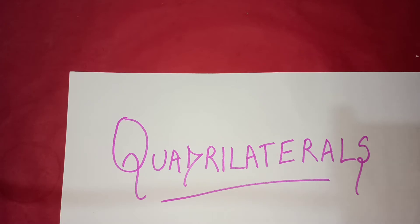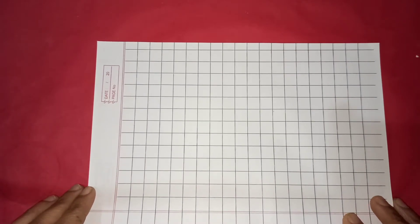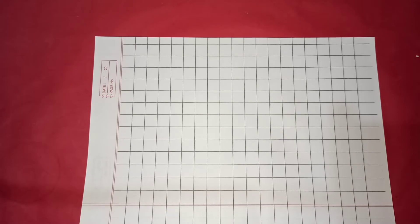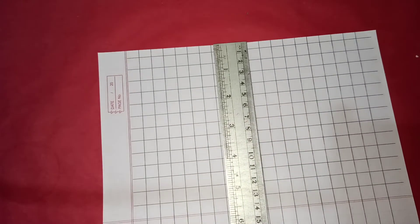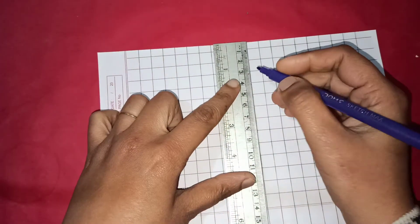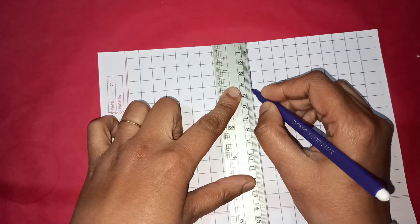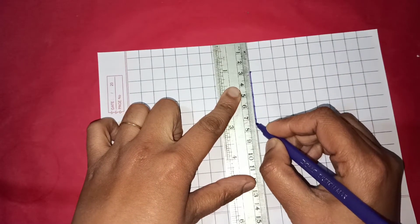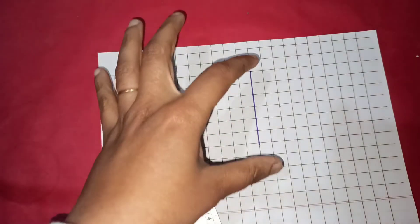I again have a square grid with me, so again we are going to draw some lines. Let's draw a line of six units - three, four, five, and six. This is a line of six units.